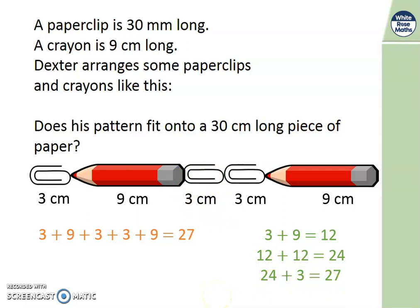Did you find another way to do it? Okay, somebody said I can do 3 times 9. Well there's one 9. There's 2 times 9. So where did the other 9 come from? Correct. 3 add 3 add 3. Or 3 times 3 makes 9. So I've got 3 9's altogether. 3 times 9 is 27. Well done if you spotted that. Will that fit onto a 30cm long piece of paper? Yes, because 27 is less than 30cm.